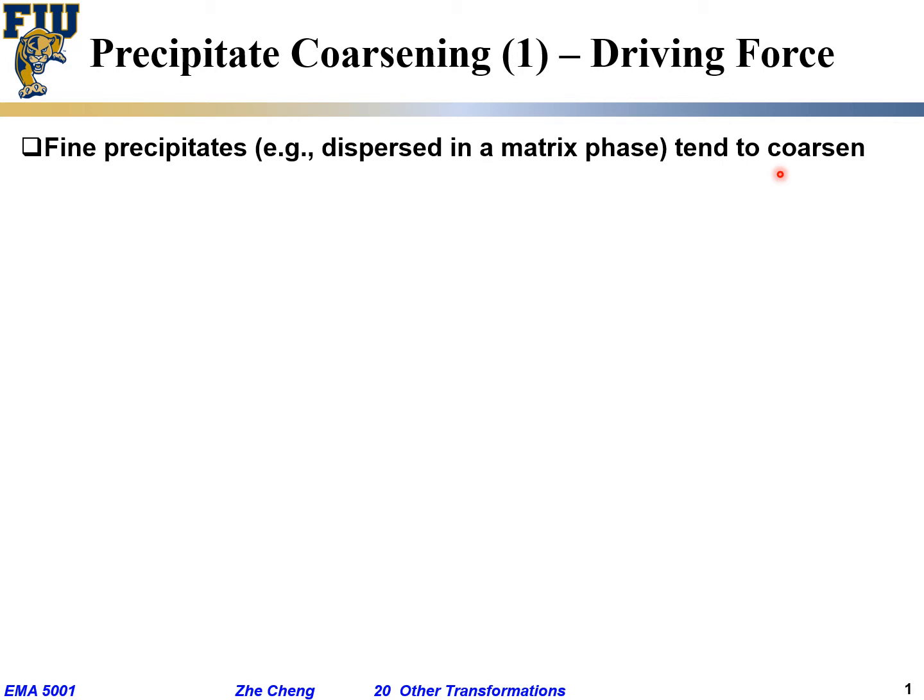Even during processing, if you are not careful, the fine precipitates that were produced may be lost through so-called coarsening, where smaller particles come together to become fewer, larger particles. Because of these fewer larger particles, dislocations can move for longer distances.